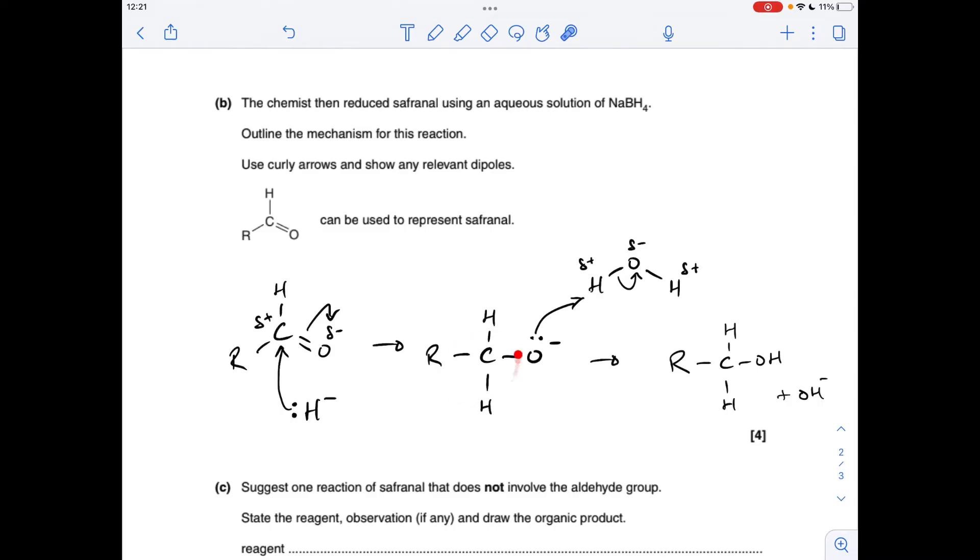So that's going to generate this intermediate here and then there's a couple of ways to finish off the mechanism. I would normally use a water molecule now so obviously show the dipoles on the water molecule, take a pair of electrons from the lone pair on that O minus to one of the hydrogens on the water molecule and then break that OH bond by heterolytic fission. That's going to generate your alcohol and an OH minus ion.